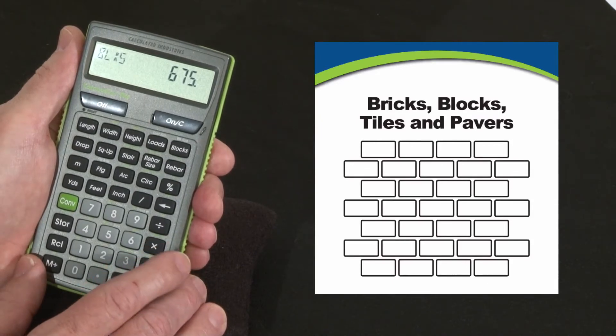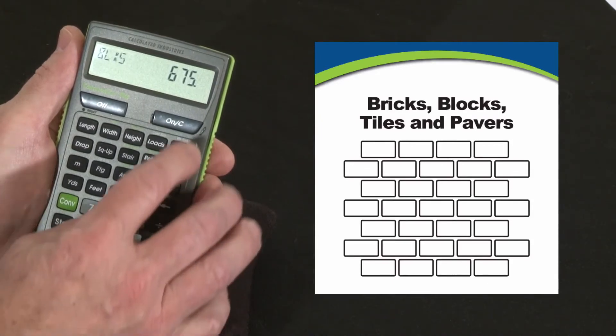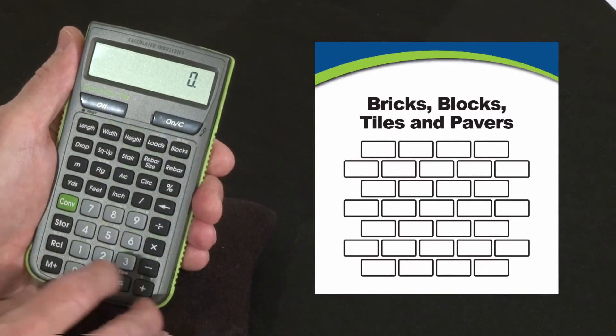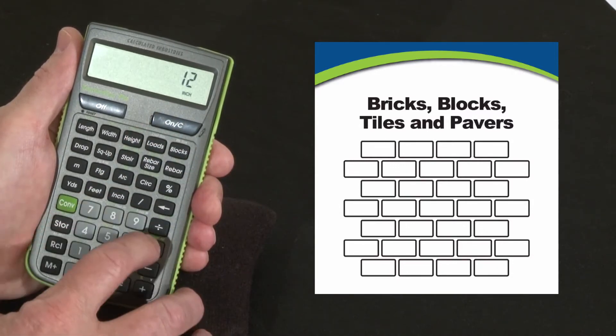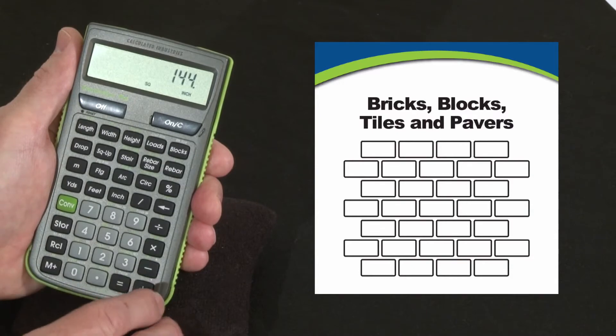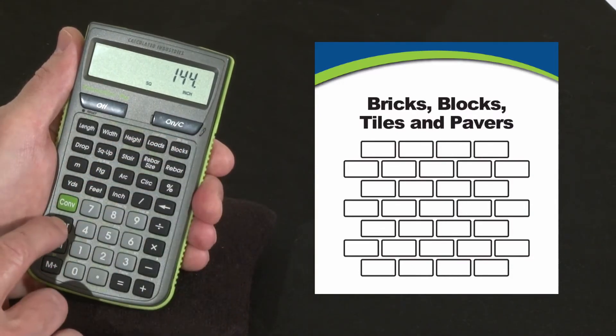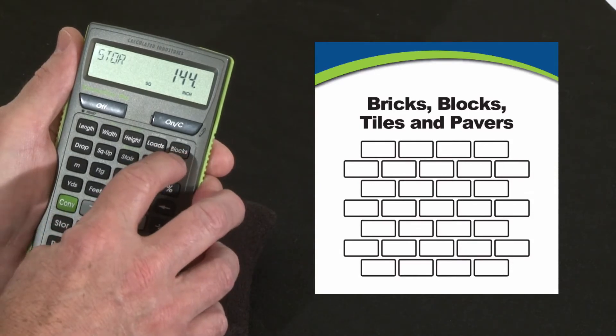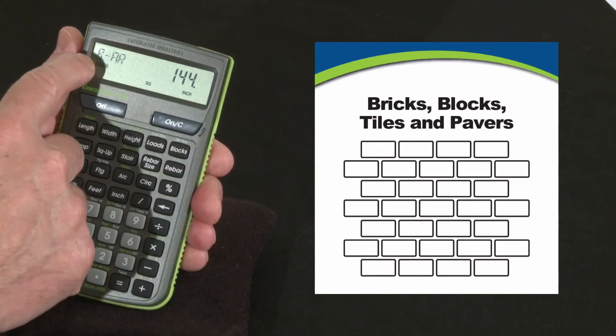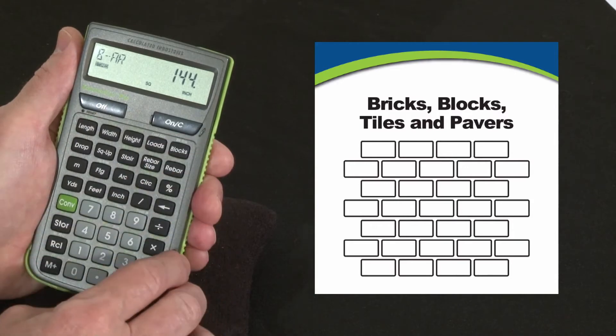Now this can also be used for tiles. So let's do a common 12 inch by 12 inch tile. One square foot, 12 inch by 12 inch equals 144 square inches. That's the surface area of a tile. So we're going to store that as our block size. The way you do that is you press store and above blocks it says block size. So now it's stored. Block area, 144 square inches.